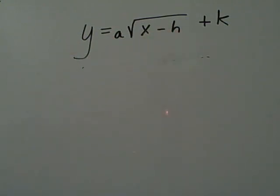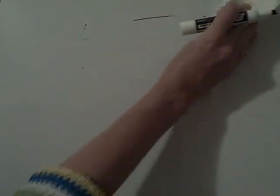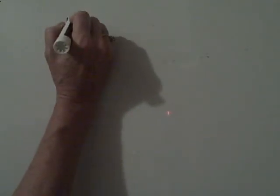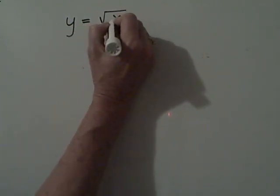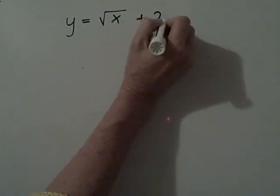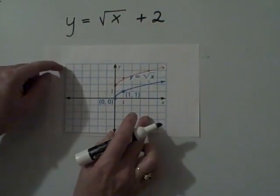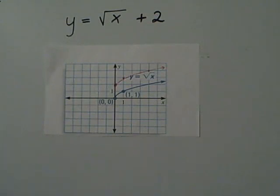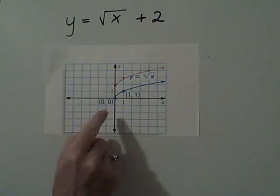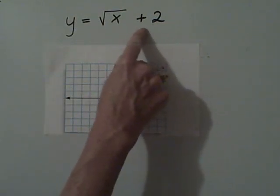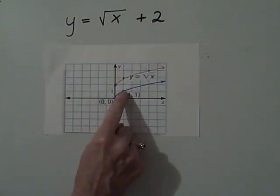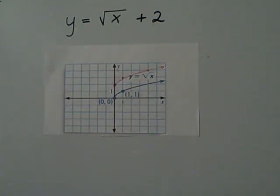So for example, let's look at the graph of the equation y equals the square root of x plus 2. Here's what the graph looks like. Notice what happened. The graph has shifted up two places as indicated in the equation. Every point on the graph shifts up two spaces.